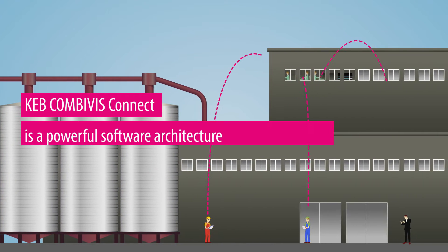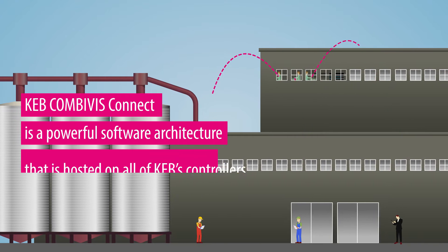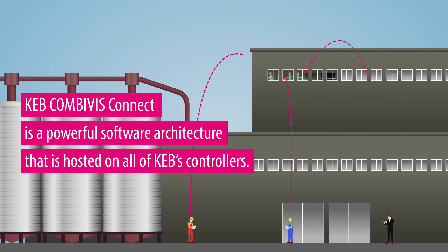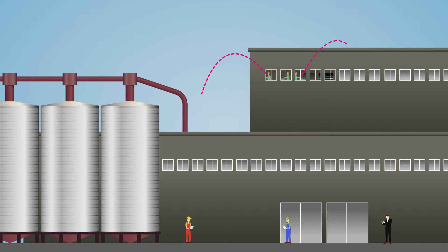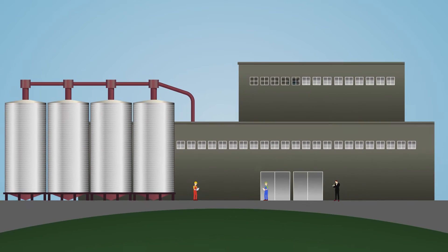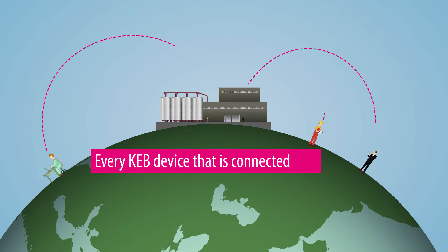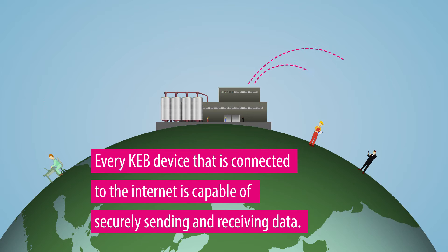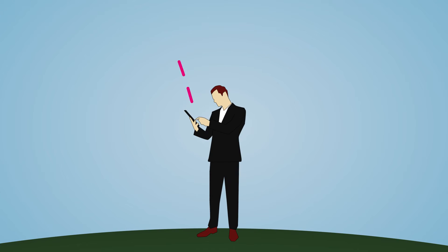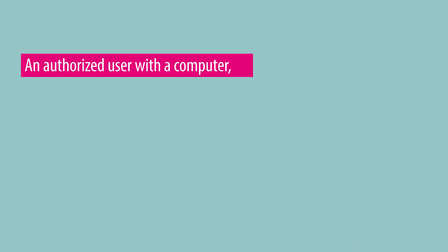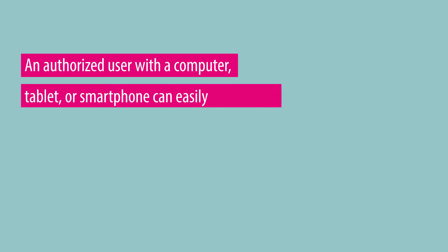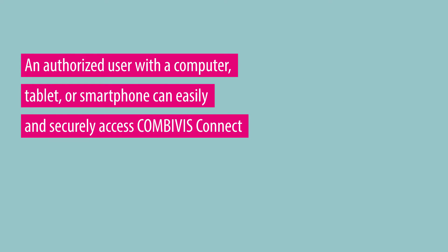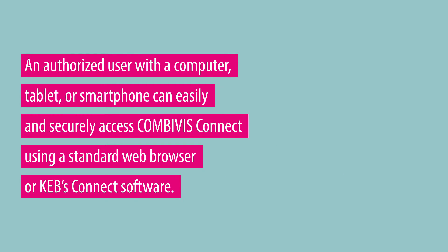KEB Combivis Connect is a powerful software architecture that is hosted on all of KEB's controllers. Every KEB device that is connected to the internet is capable of securely sending and receiving data. An authorized user with a computer, tablet, or smartphone can easily and securely access Combivis Connect using a standard web browser or KEB's Connect software.